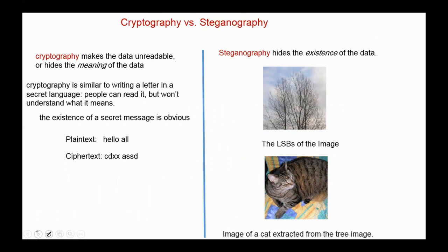What is the difference between cryptography and steganography? Cryptography makes the data unreadable, or hides the meaning of data. Cryptography is similar to writing a letter in a secret language — people can read it but won't understand what it means. For example, we have the plaintext, and this is the ciphertext. During transmission, people or attackers can see the ciphertext but cannot understand its meaning. Steganography, on the other hand, hides the existence of data entirely.